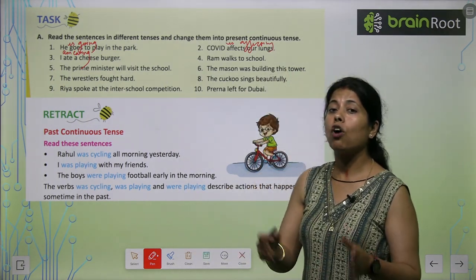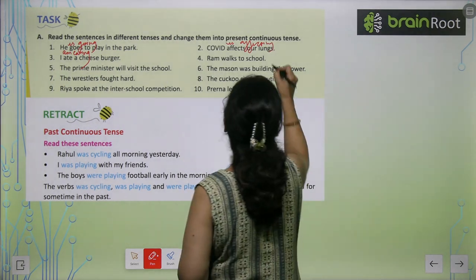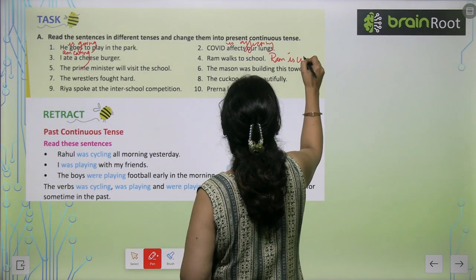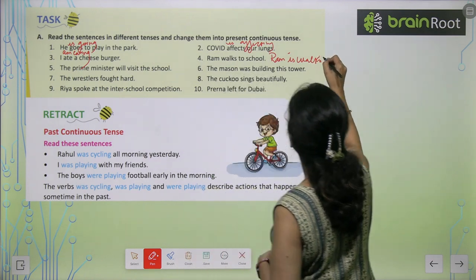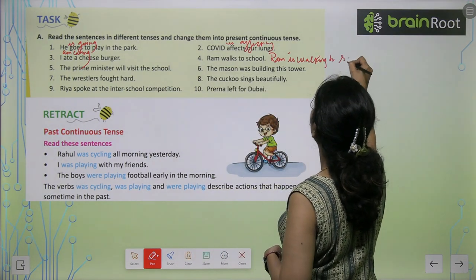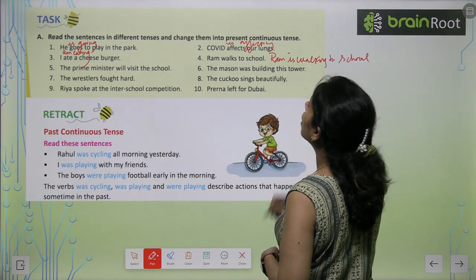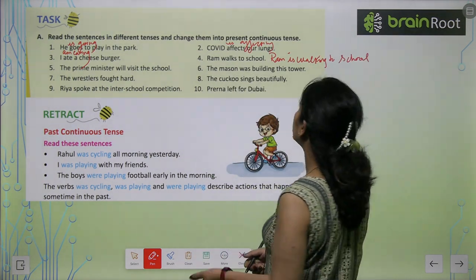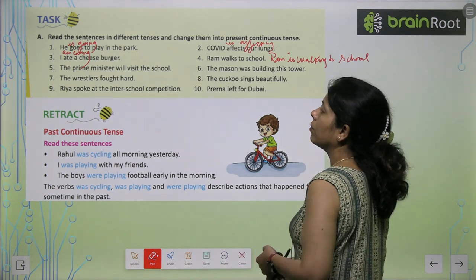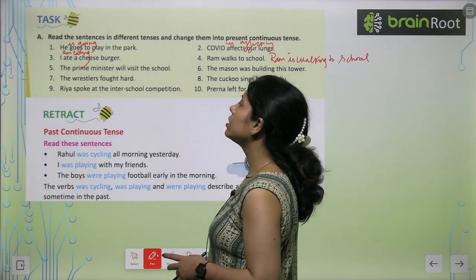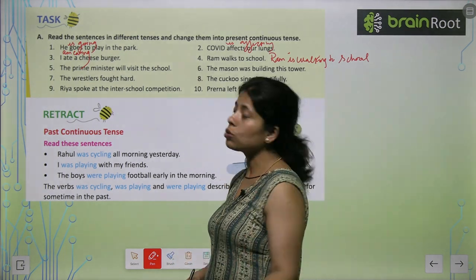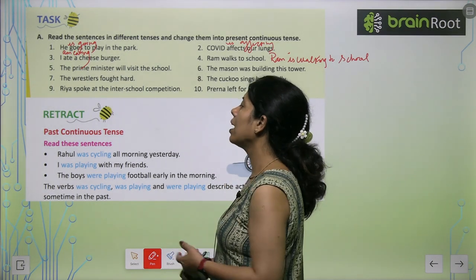'Ram walks to school' becomes 'Ram is walking to school.' 'The mason was building his tower' becomes 'The mason is building this tower.' 'The prime minister will visit the school' becomes 'The prime minister is visiting the school.' You have to change the tense accordingly.